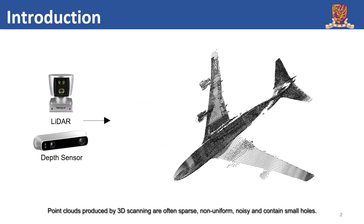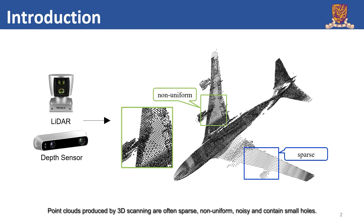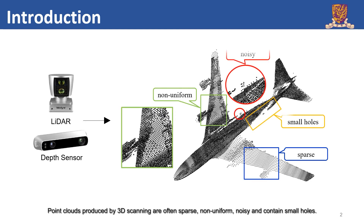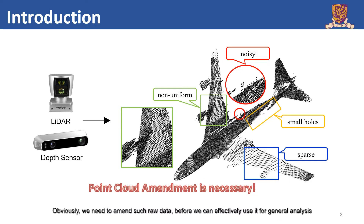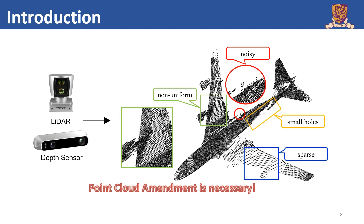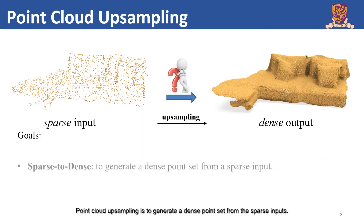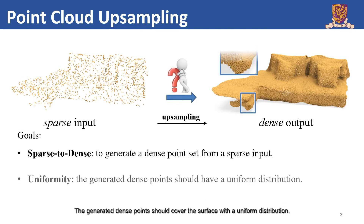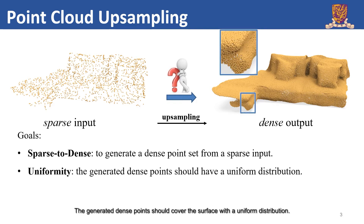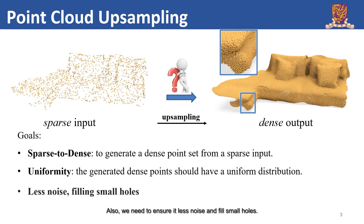Point clouds produced by 3D scanning are often sparse, non-uniform, noisy, and contain small holes. Obviously, we need to amend such raw data before we can effectively use it for general analysis. Point cloud upsampling is to generate a dense point set from the sparse inputs. The generated dense points should cover the surface with a uniform distribution, with less noise and filled small holes.